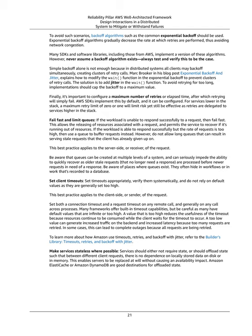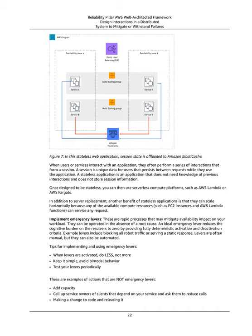Make services stateless where possible: Services should either not require state, or should offload state such that between different client requests, there is no dependence on locally stored data on disk or in memory. This enables servers to be replaced at will without causing an availability impact. Amazon ElastiCache or Amazon DynamoDB are good destinations for offloaded state. A stateless application is an application that does not need knowledge of previous interactions and does not store session information. Once designed to be stateless, you can then use serverless compute platforms, such as AWS Lambda or AWS Fargate. Another benefit of stateless applications is that they can scale horizontally because any of the available compute resources can service any request.